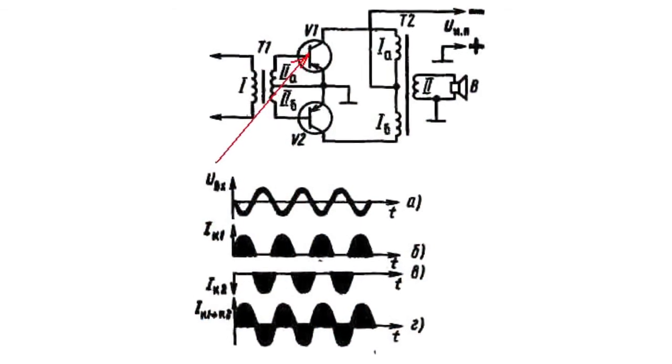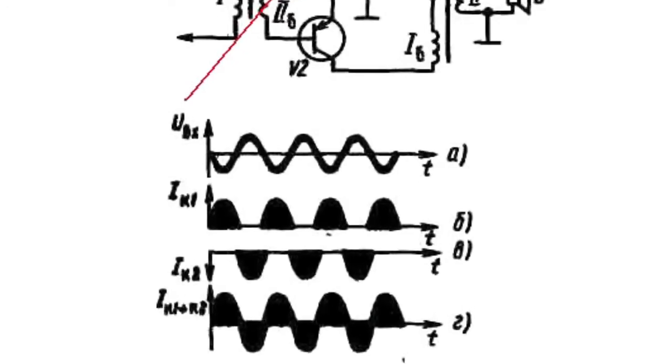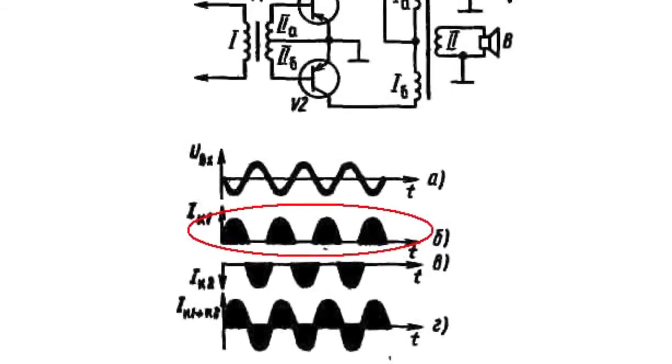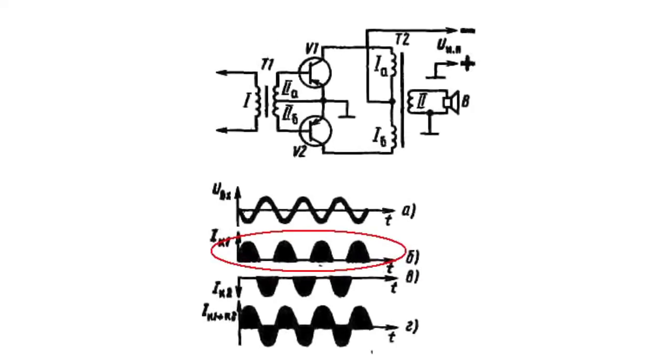When the half wave of V1 transistor is negative, it opens through and current passes through the primary bonding of the outlet transformer. The V2 transistor is closed in this moment, as the voltage half wave of its base is positive.